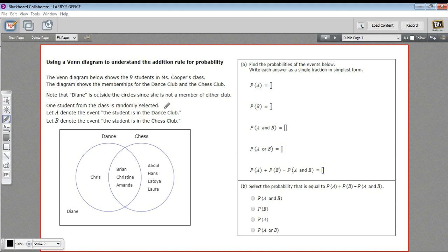So we're going to calculate some probabilities from this diagram, and then we're going to use those probabilities to talk about something called the addition rule for probability, which is a probability formula that we want you to know.